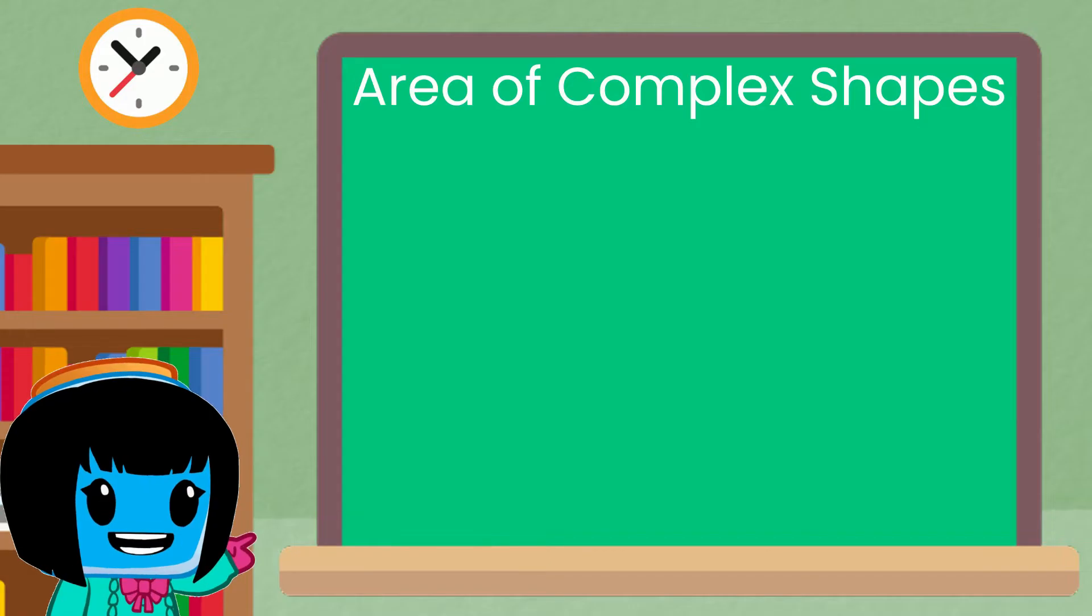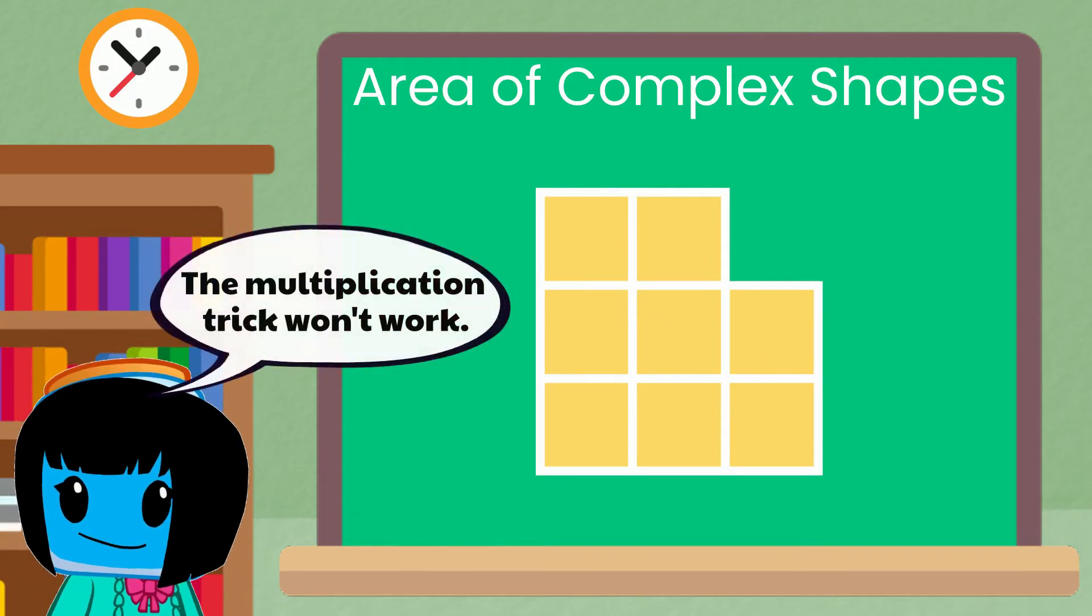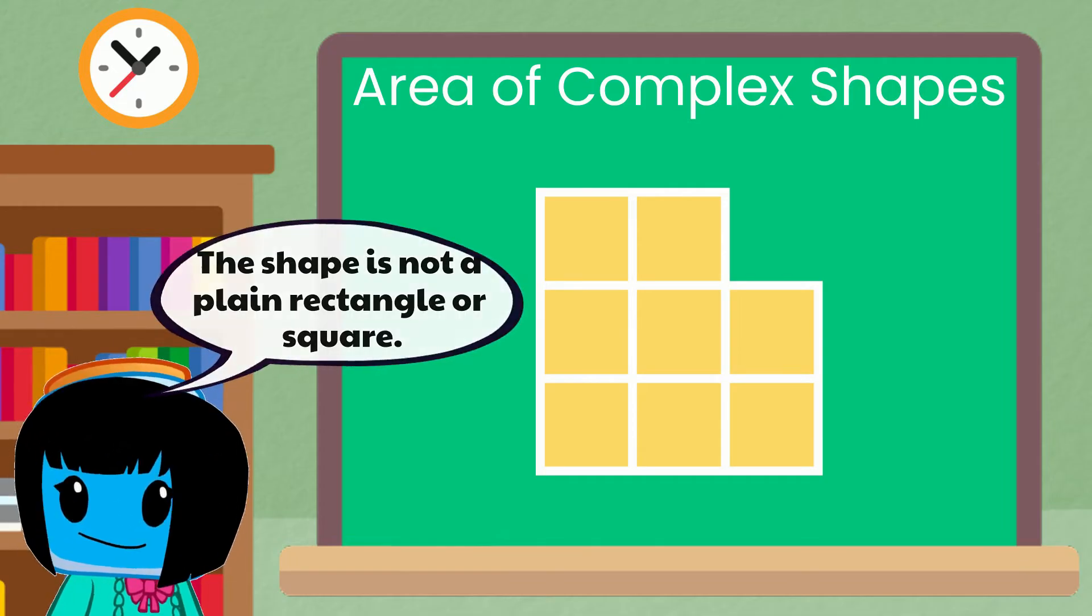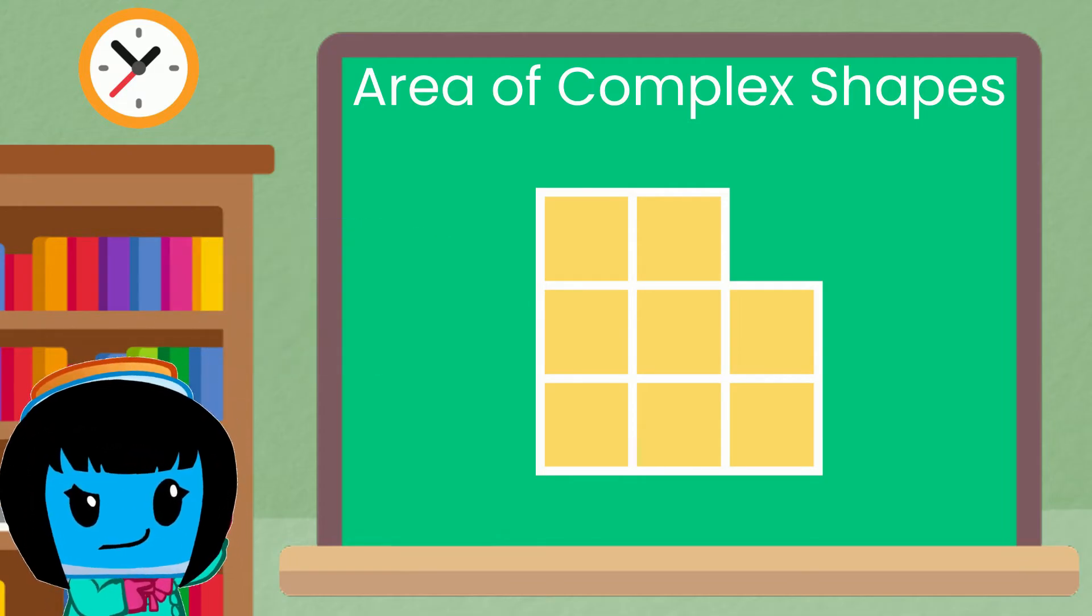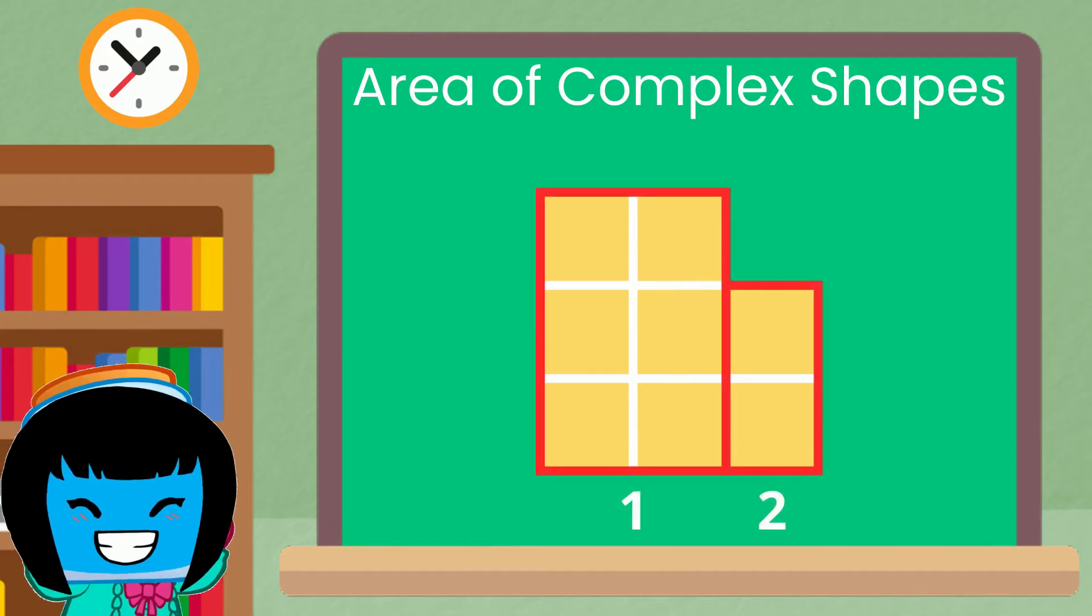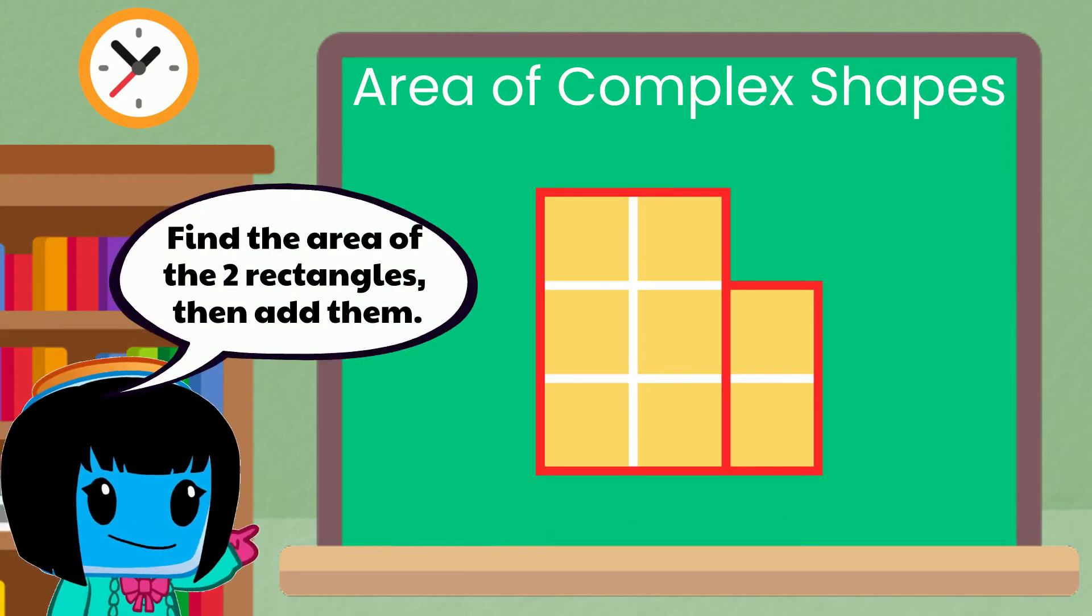Now what if we have a complex shape like this? The multiplication trick won't work because it's not a plain rectangle or square. But actually we can cut this shape to make two rectangles. So to get the area of this complex shape we can find the area of the two rectangles using the multiplication trick and then add them together.